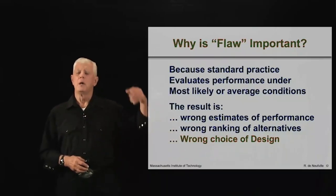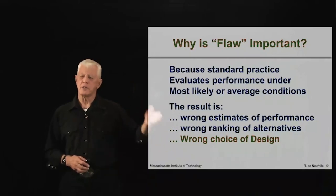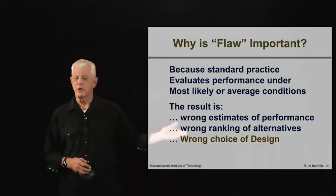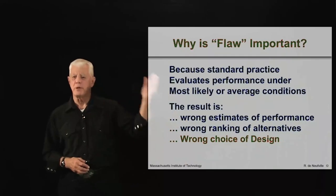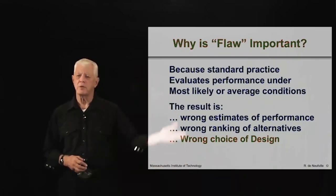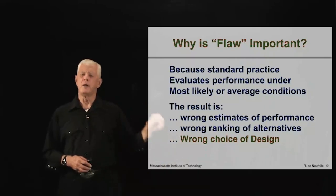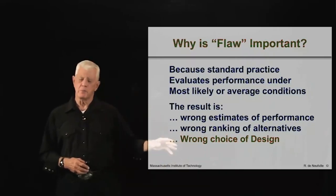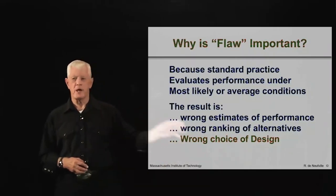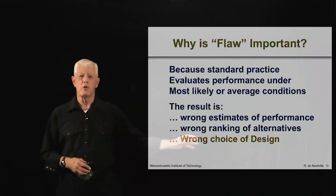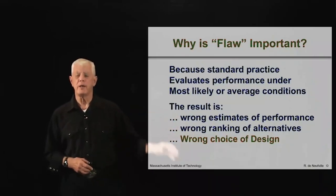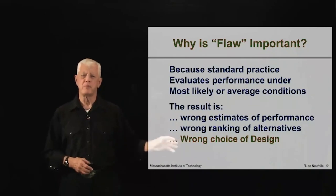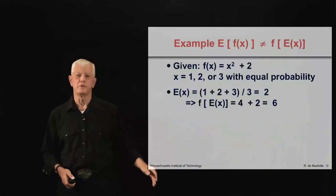That is, unless you really look at how the system performance occurs over the range of possibilities, the ranges of demands, the ranges of performance, and ranges of prices, unless you do that, you get the wrong answers. Mathematically, they may be correct, but they're not what's going to happen. And you get the wrong choice of design. That's why you should care about it. That's why you should not be a victim of the flaw of averages.